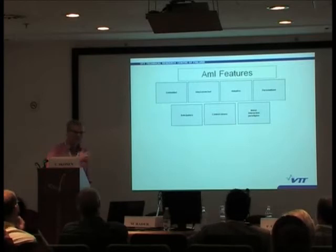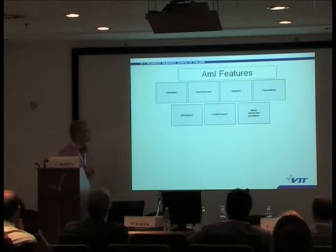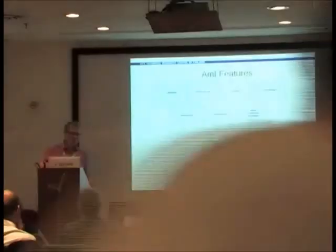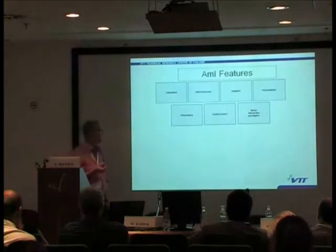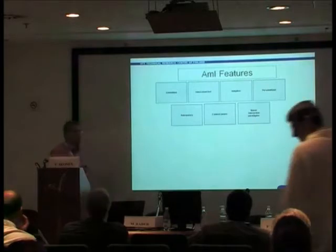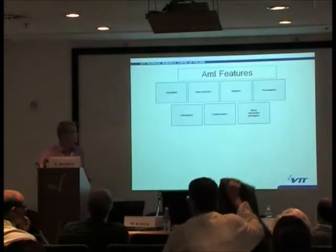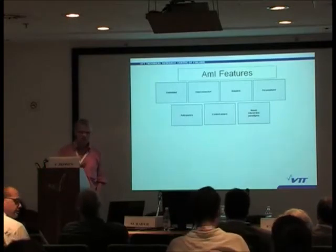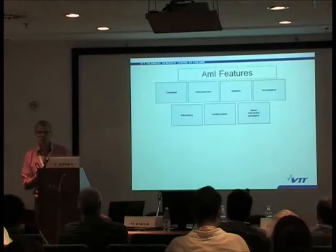Here is an example from ambient intelligence. The main defining features for ambient intelligence are that it is embedded, interconnected, adaptive, personalized, anticipatory, context-aware, and it tries to develop and use novel interaction paradigms.